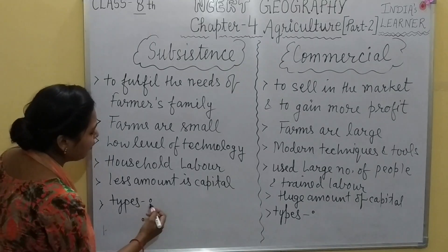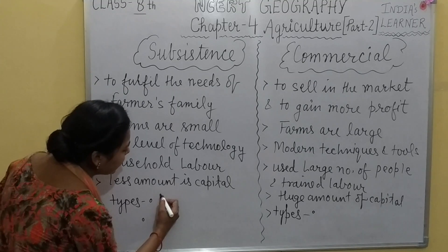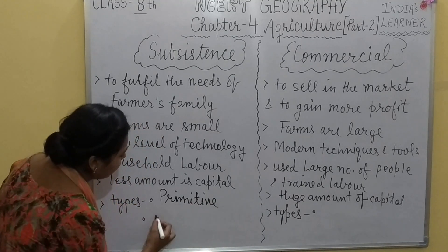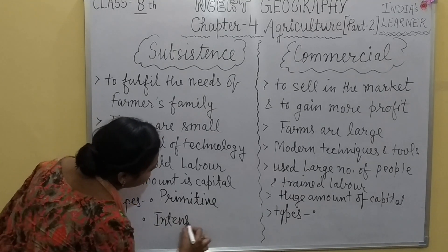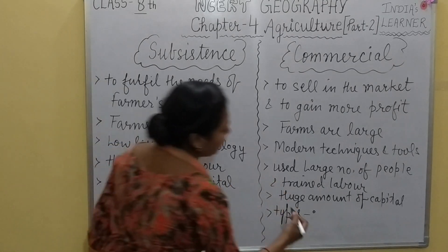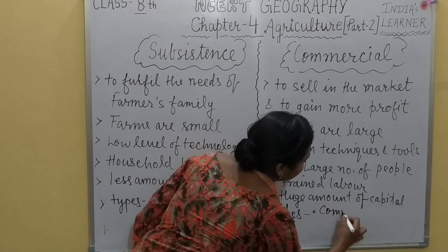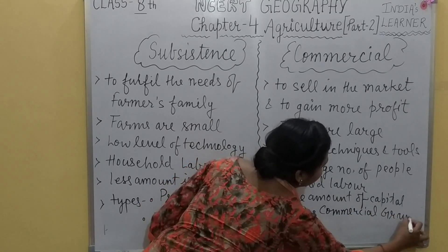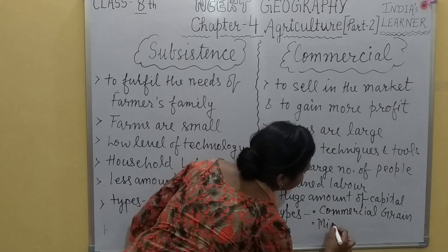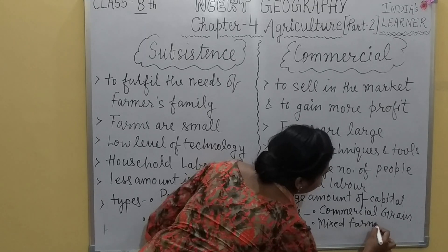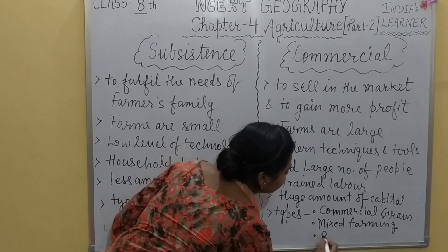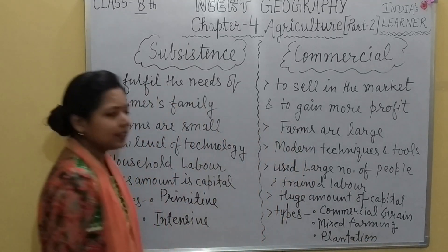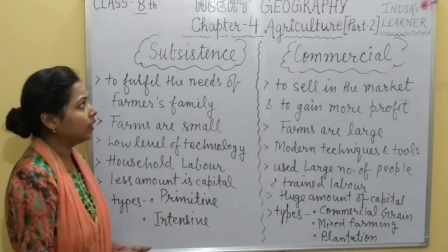Subsistence farming is further divided into two categories: primitive and intensive subsistence farming. Commercial farming is divided into three main categories: commercial grain farming, mixed farming, and plantation. Let us now know more about each of them in detail.